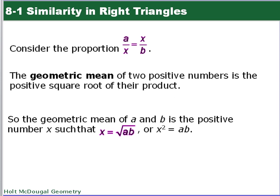Okay, so now let's look at this proportion, A over X equals X over B. This is what's called the geometric mean. The geometric mean of two positive numbers is the positive square root of their product. So the geometric mean of A and B is a positive number such that X equals the square root of AB. If you solve this proportion, you'd have X squared equals AB, so X equals the square root of AB.